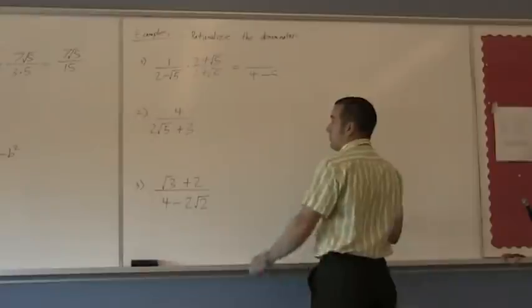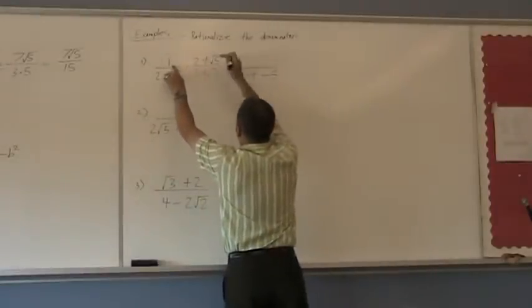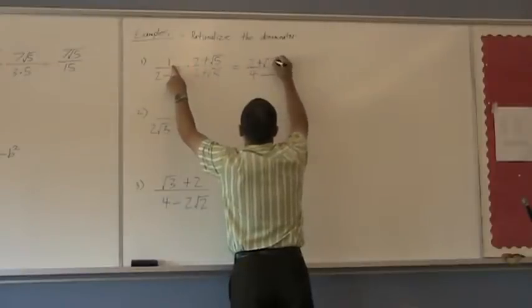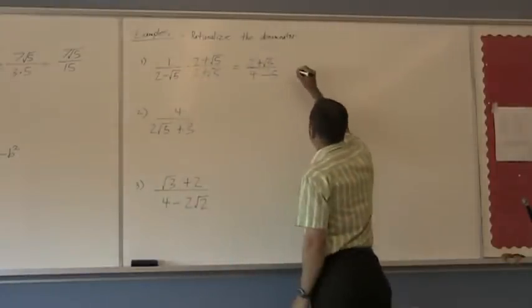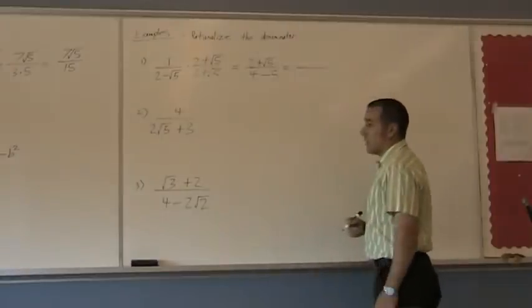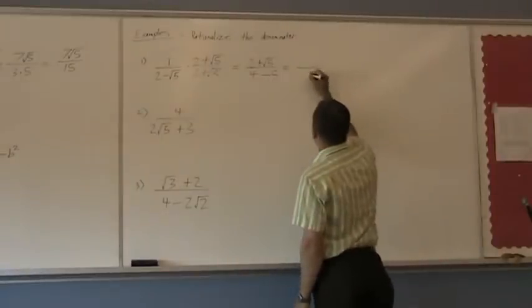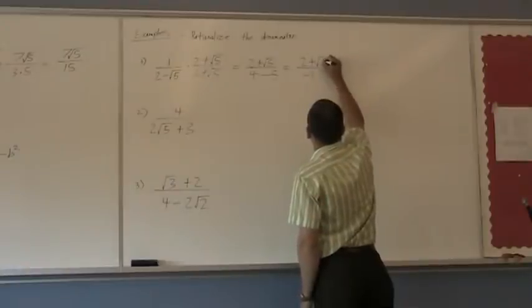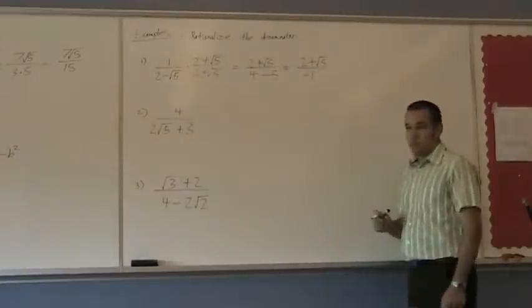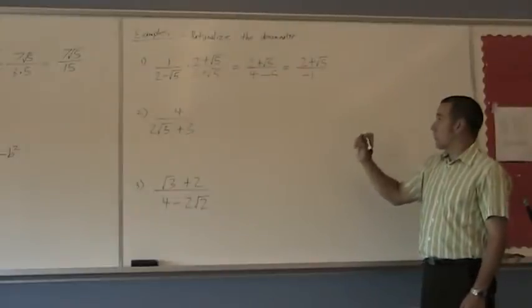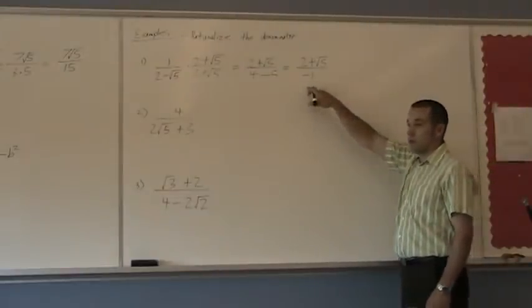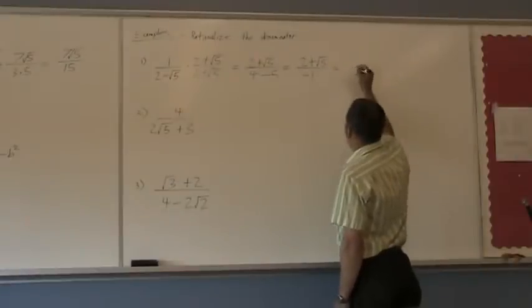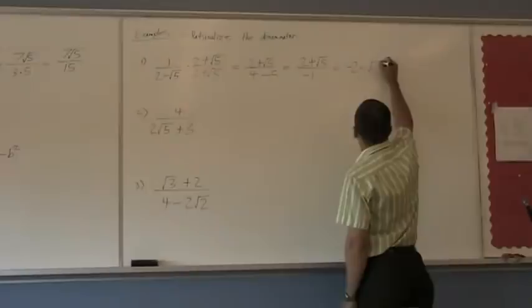Then we multiply the top. 1 times anything is itself, so 1 gives me 2 plus square root of 5. Now, 4 subtract 5 gives me negative 1. On the top I have 2 plus square root of 5. And now, to carry this forward, I cannot have a negative on the denominator, so I bring it to the top. And I divide it by 1, so this just becomes negative 2 subtract square root of 5.